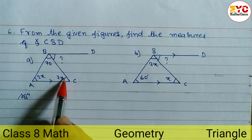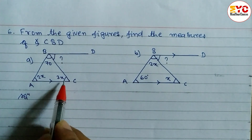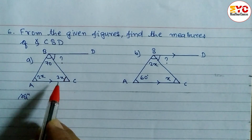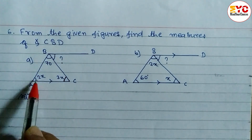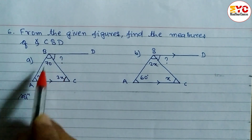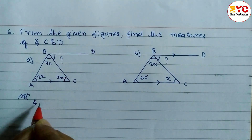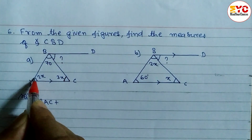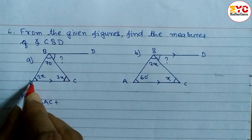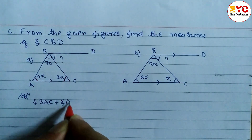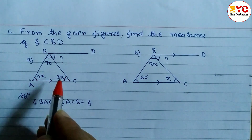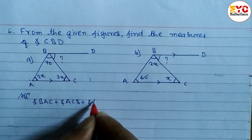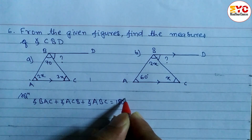First of all, we have to find out the value of angle ACB, which is 3x. This angle 3x and angle CBD are alternate angles. You can see here ABC is a triangle, so when you add these three angles we get 180 degrees. So we can write: angle BAC plus angle ACB plus angle ABC is equal to 180 degrees.